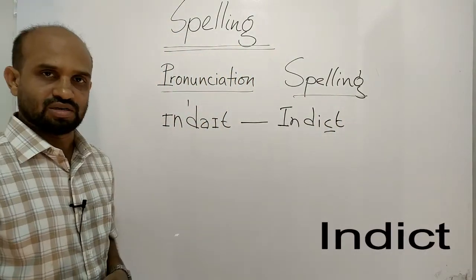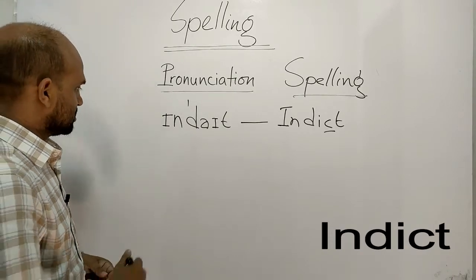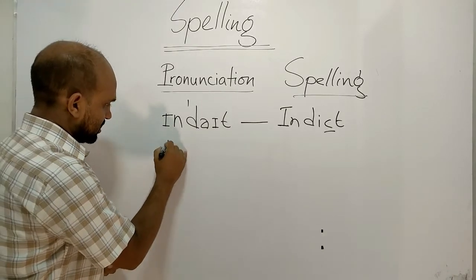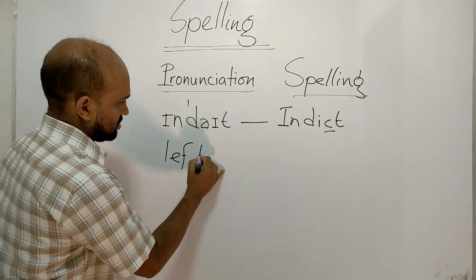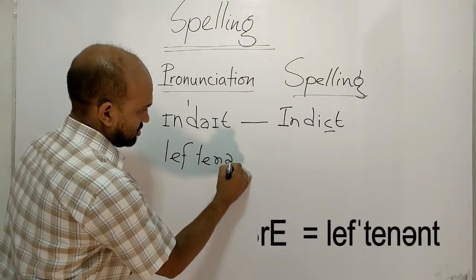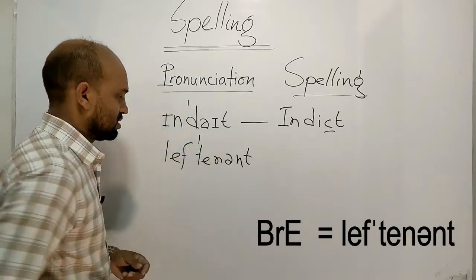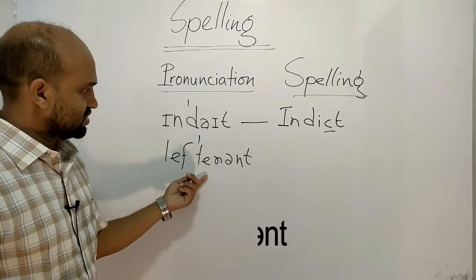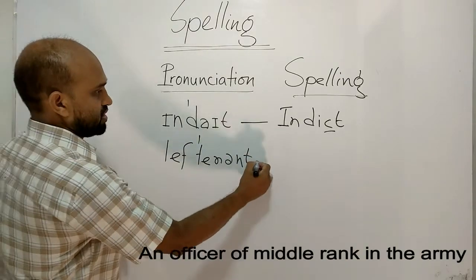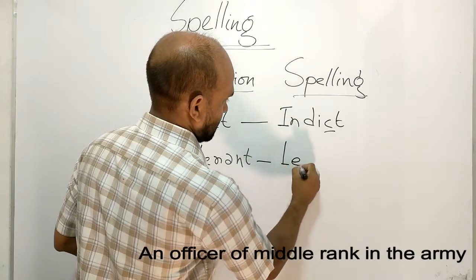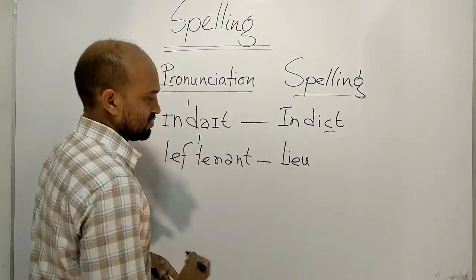Next one is lieutenant. An officer of middle rank in the army. Spelling is L-I-E-U-T-E-N-A-N-T, lieutenant.